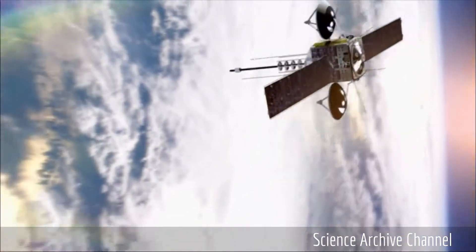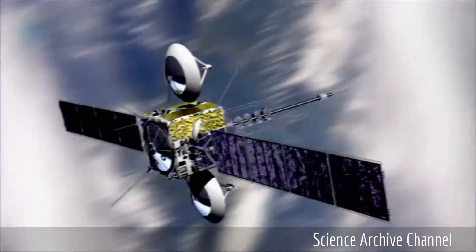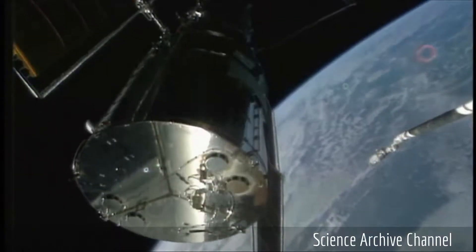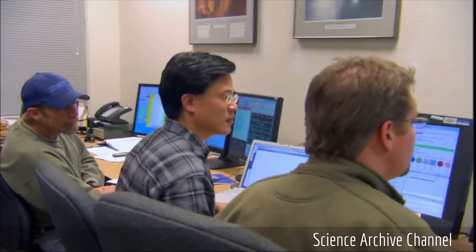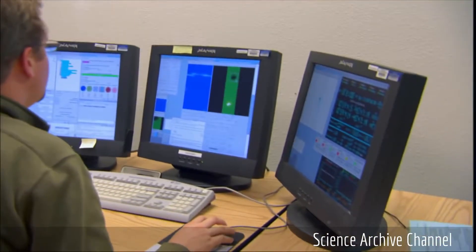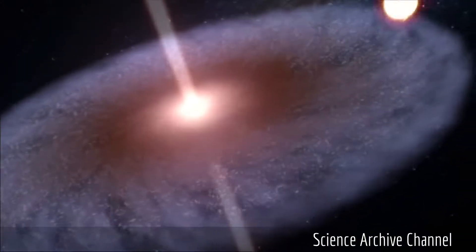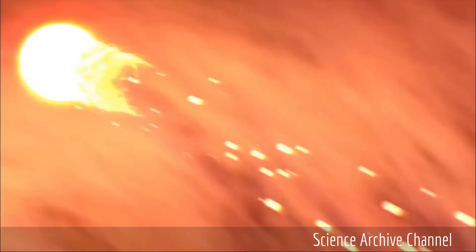So then, how close would a magnetar have to be to wreak havoc in our solar system? Some suggest that a blast from a magnetar even 10 light years away could produce cosmic chaos that would destroy our ozone layer and cause mass extinctions.